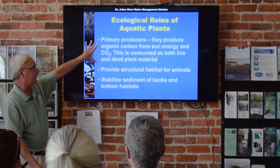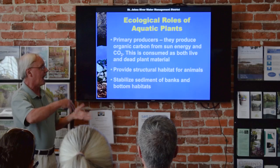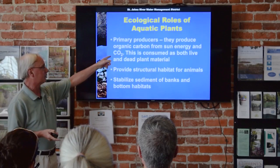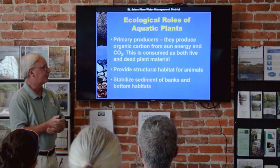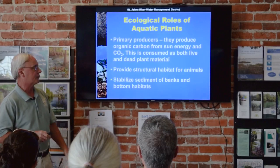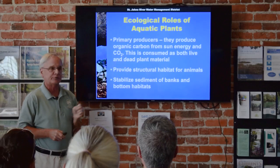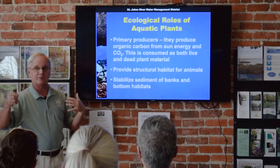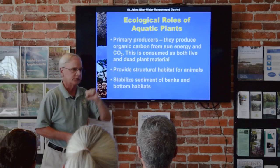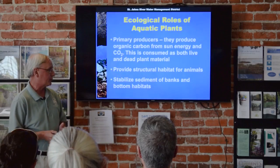The ecological roles and value of aquatic plants — the biggie is that they are what we call primary producers. They produce organic carbon, living biomass from sun energy and inorganic elements like carbon dioxide, and that's consumed on up the food chain. Some plant production is consumed live, and some is still valuable food material after it dies and begins to decay. If you're an angler, you know the plants provide structural habitat for animals to live in, and they also stabilize the sediments of the banks and the bottom.